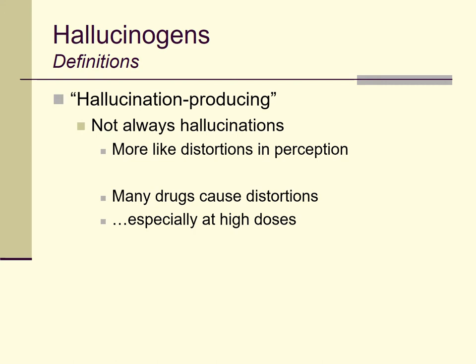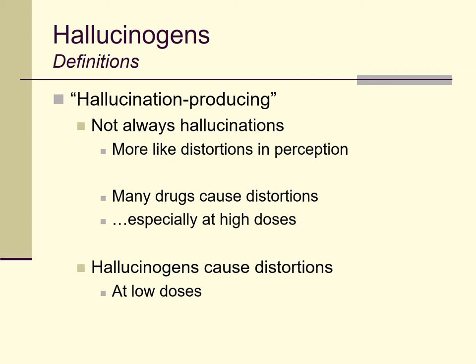It's worth noting that many drugs cause distortions in perception, especially at high doses. So if you've smoked a lot of marijuana, drunk a lot of alcohol, or even under some circumstances had an awful lot of caffeine, you can have distortions in the way you're perceiving the world. The difference is that those distortions occur at relatively high doses. With hallucinogens, we see distortions in perception at relatively low doses.